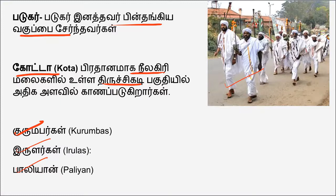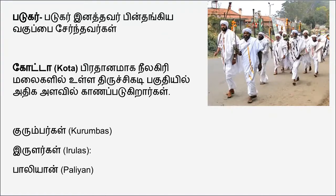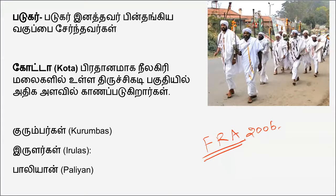What can you say about Paliyan? What are the tribes of Paliyan? We have known all the names of Kurumba, Irula, Paliyan, Kota — we have known all the names of tribal populations. We have an overview of how many tribes are important. The most important thing related to these tribes is the Forest Rights Act, 2006.